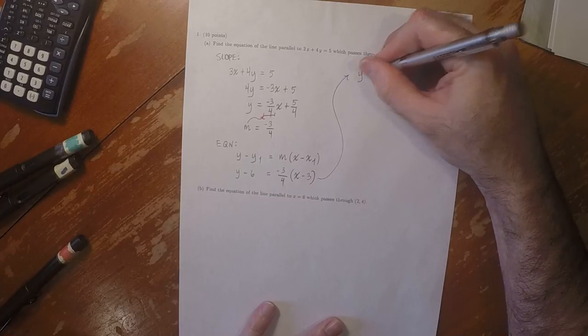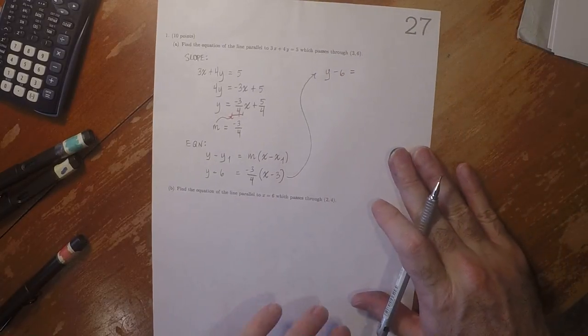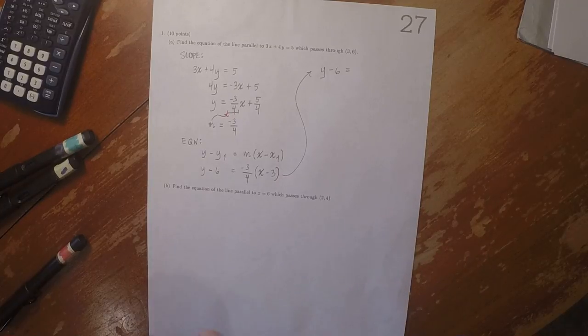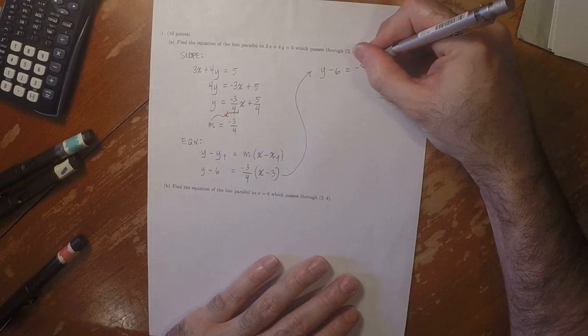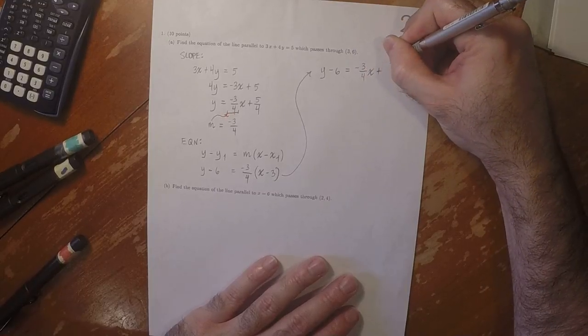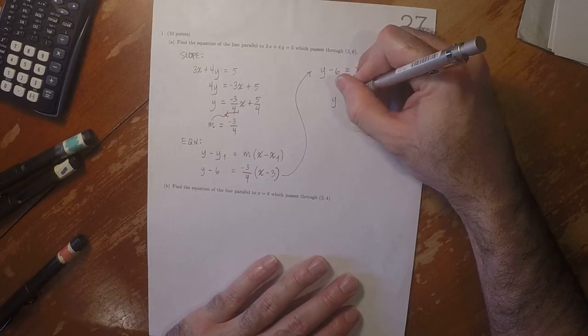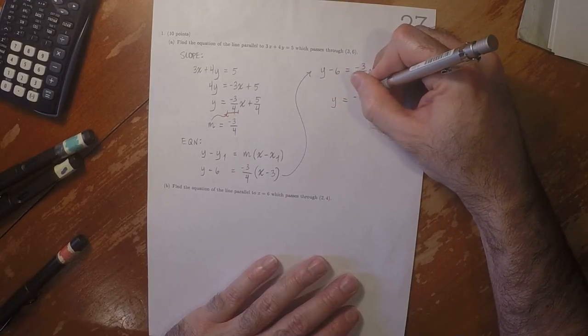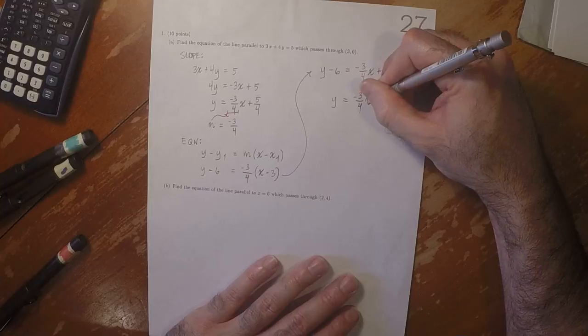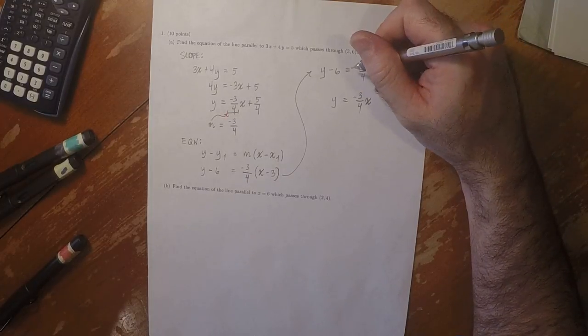So y minus 6 is negative 3 fourths x plus 9 fourths. So y is negative 3 fourths x. And then 9 fourths plus 6.